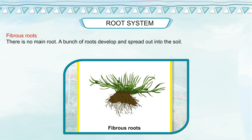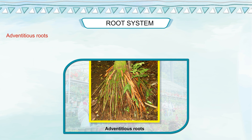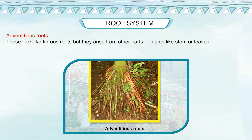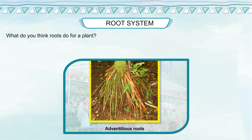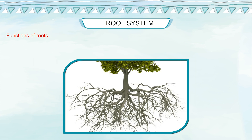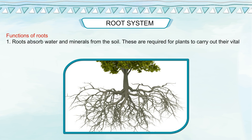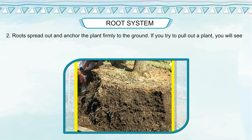Fibrous roots: there is no main root. A bunch of roots develop and spread out into the soil. Adventitious roots: these look like fibrous roots but they arise from other parts of plants like stem or leaves. Functions of roots: roots absorb water and minerals from the soil, which are required for plants to carry out their vital life functions. Roots spread out and anchor the plant firmly to the ground.